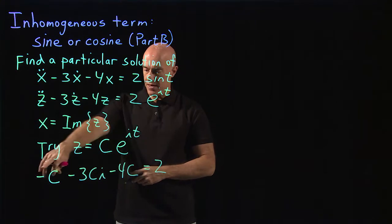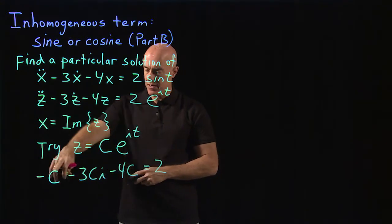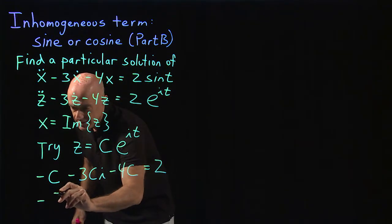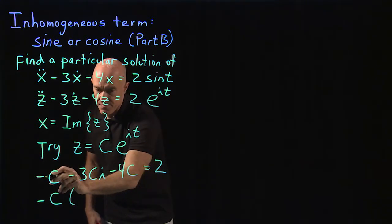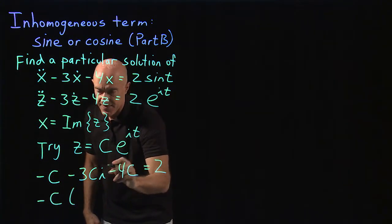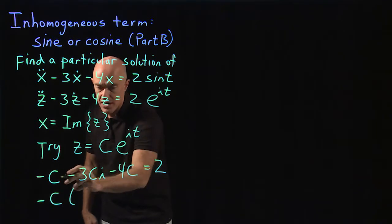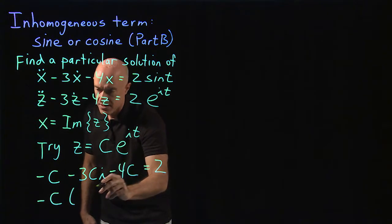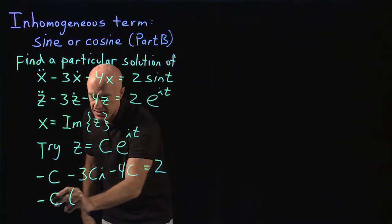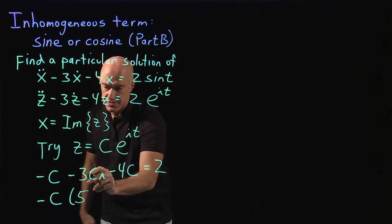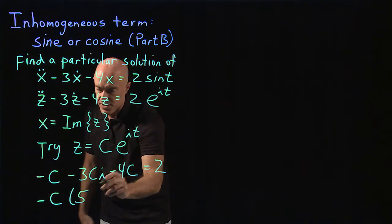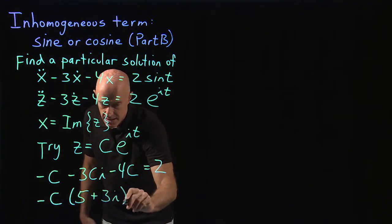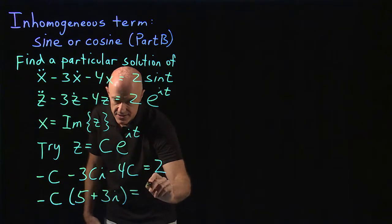So we can factor out the c here. So factor out a minus c. We get minus c, and then we have minus c plus 4c is 5. Sorry, 1 plus 4 is 5, plus 3i. So here we'll have, this is minus 5c, so we'll end up with 5, and then this is minus 3ci, so we'll end up with plus 3i. And that's equal to the right hand side is 2.